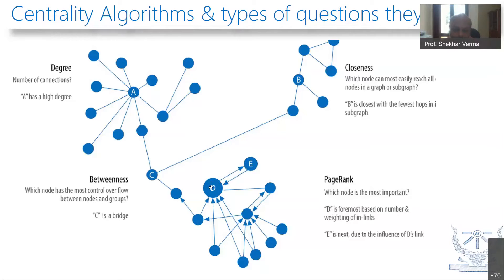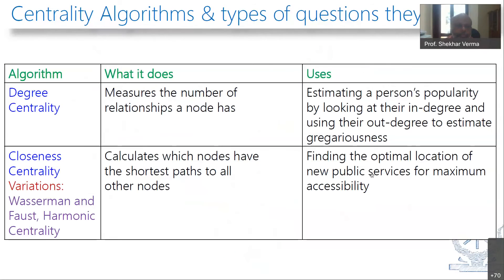PageRank estimates the importance of the current node from its neighbors and their neighbors — not just local influences but non-local influences are also taken into consideration. We can do ranking and, for example, all NLP tasks like translation, disambiguation, and detection can be done using PageRank. In this particular graph, D has the maximum PageRank, and E is more important than all other nodes except D because of its proximity to D — there is a mutual influence between E and D.